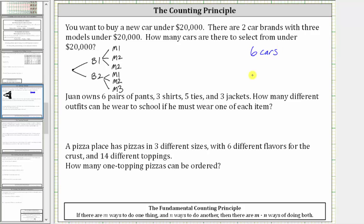Which leads us to the fundamental counting principle, which states if there are m ways to do one thing and n ways to do another, then there are m times n ways of doing both.